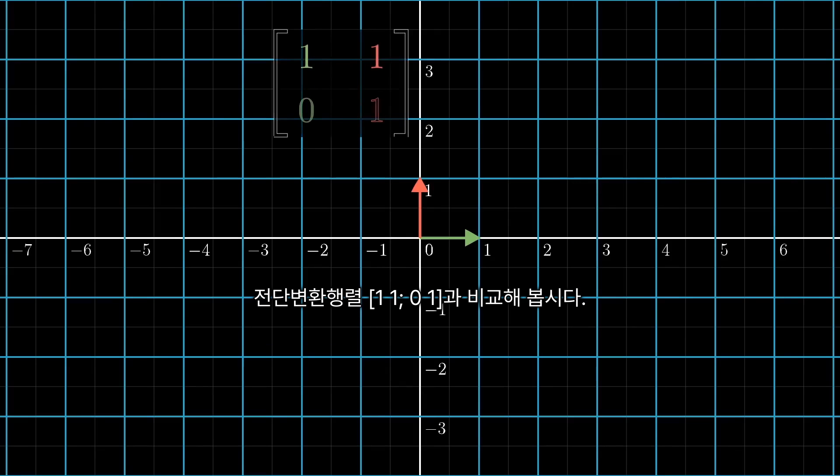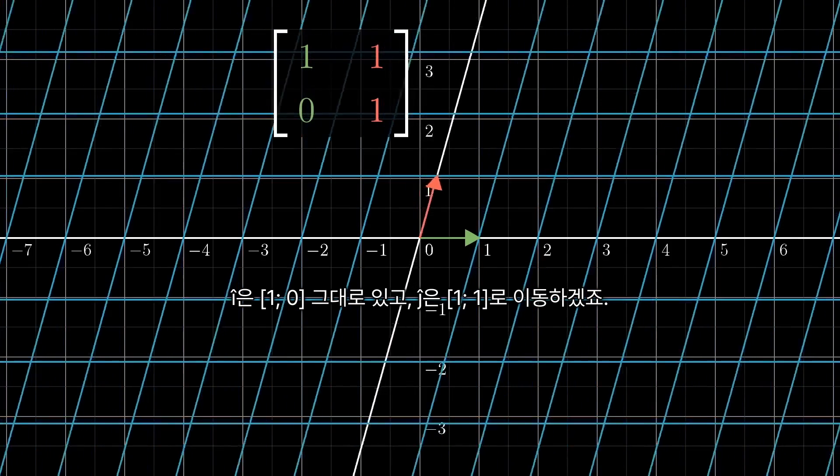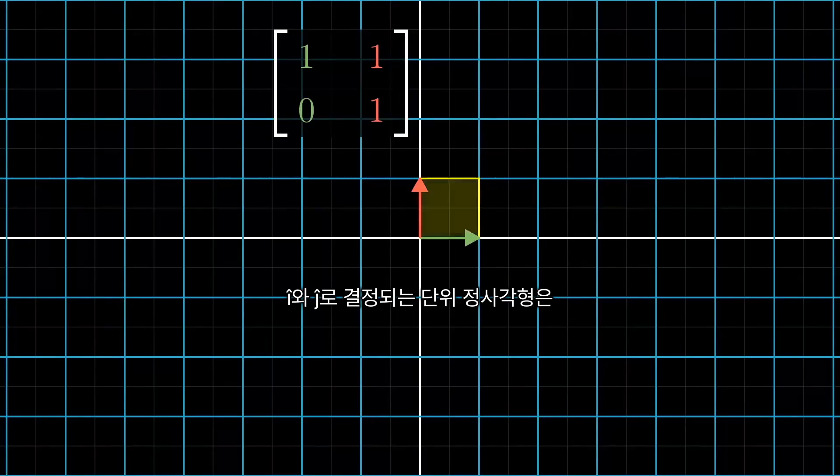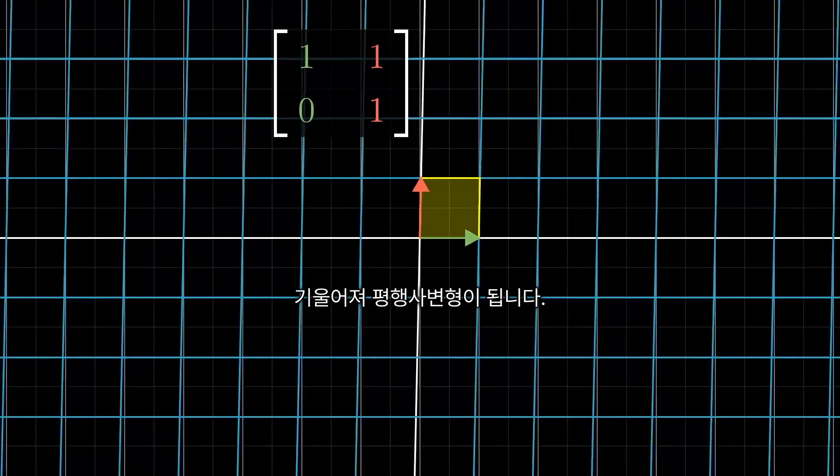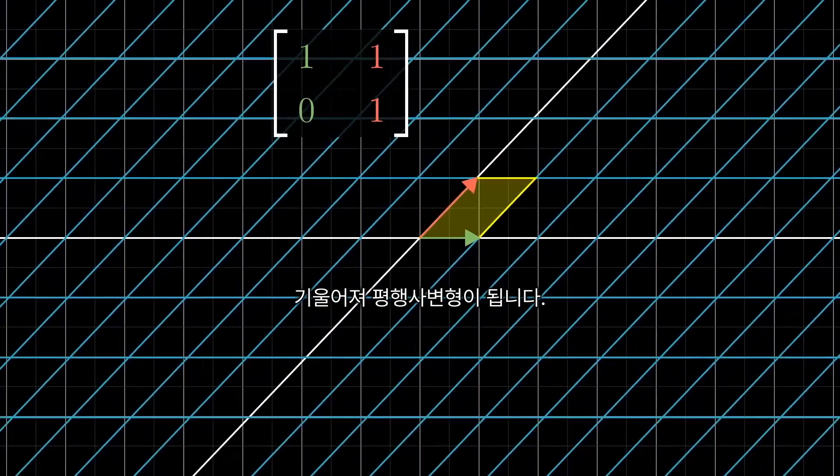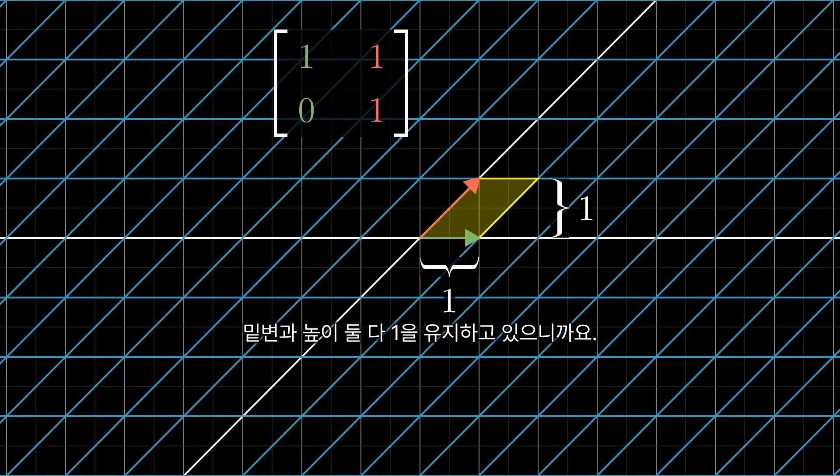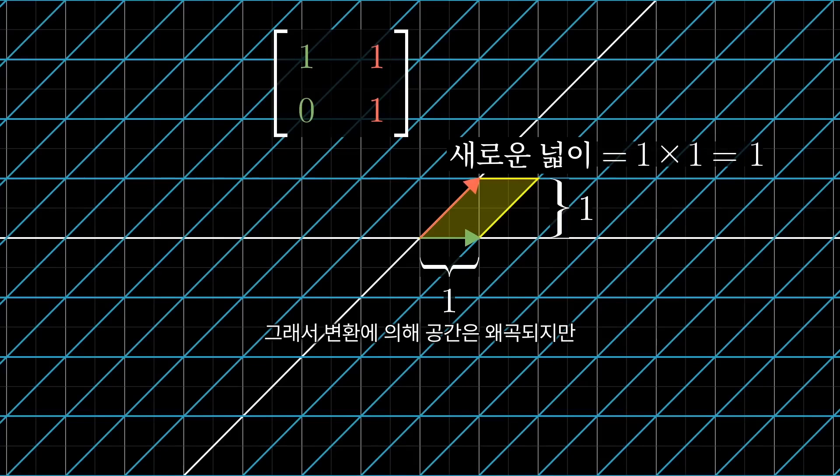Compare that to a shear whose matrix has columns 1, 0 and 1, 1, meaning i-hat stays in place and j-hat moves over to 1, 1. That same unit square, determined by i-hat and j-hat, gets slanted and turned into a parallelogram, but the area of that parallelogram is still 1, since its base and height each continue to have length 1. So even though this transformation smushes things about, it seems to leave areas unchanged, at least in the case of that 1-unit square.